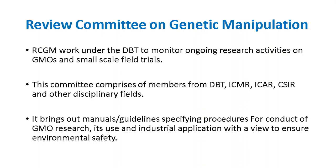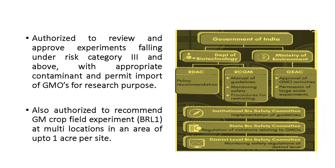RCGM is authorized to recommend genetically modified crop field experiments at the level of BRL1 at multi-locations in an assigned area of up to one acre per site. It is also authorized to review and approve experiments falling under risk category 3 and above with appropriate containment, and to permit import of GMOs for research purposes. Risk category 3 includes experiments involving toxin gene cloning and cloning for vaccine production, and it requires prior approval before commencement.